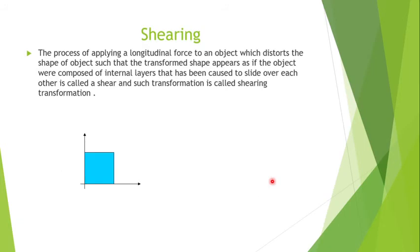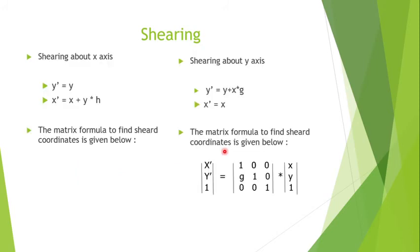Shearing is the process of applying a longitudinal force to an object which distorts the shape of the object such that the transformed shape appears as if the object were composed of internal layers that have been caused to slide over each other. When a longitudinal force is applied on an object so that its area does not change but its shape gets distorted, it is called shear. Shearing can be done in two ways: shearing about x-axis, and shearing about y-axis. In shearing about x-axis, the longitudinal force acts parallel to the x-axis; in shearing about y-axis, the longitudinal force acts parallel to the y-axis.